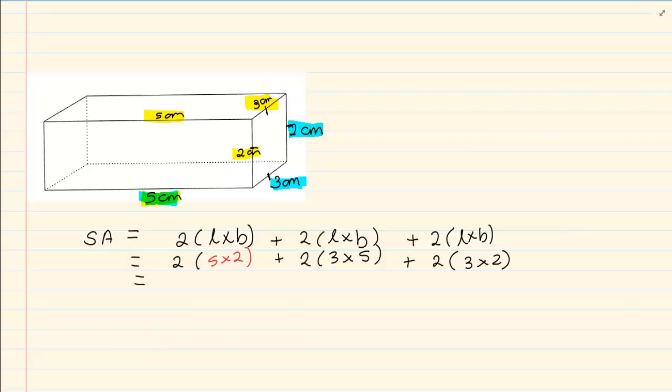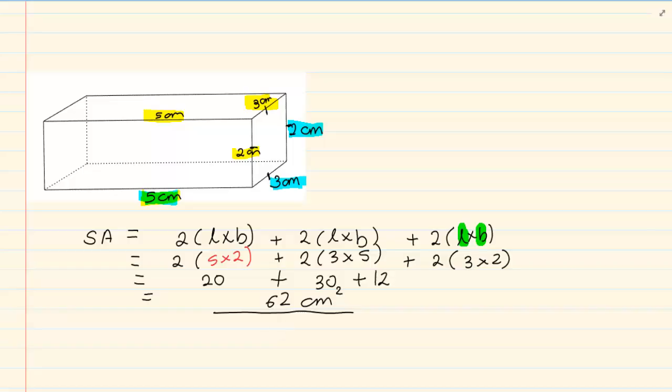Now from here you can use your calculator. But it is easier to just do the values. We know five times two is ten. Two times ten is twenty. Plus five times three is fifteen times two is thirty. Three times two is six times two is twelve.